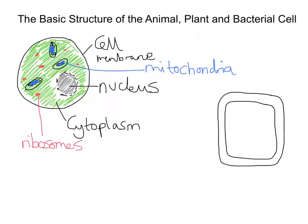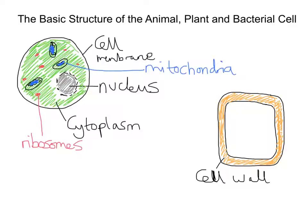I want to draw around the outside and colour this in. This part that I've just coloured in here is a cell wall. Now this is something that very importantly the animal cell does not have. The plant has a cell wall and it's made of something called cellulose — a cellulose cell wall. That's important because the cell wall in bacteria, which do have a cell wall, is made of something called peptidoglycan. So it's a slightly different structure. The cell wall is going to support the cell.